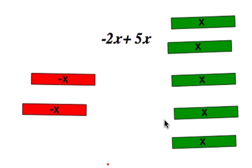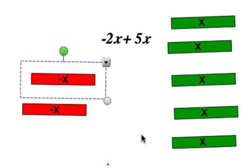So there's negative 2x and 5x's, and we're going to add these together. Now each of these negative x's is going to cancel out, according to the zero principle, one of the positive x's.